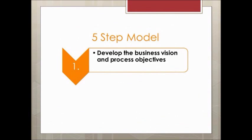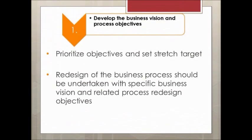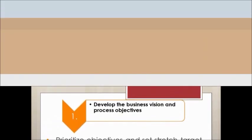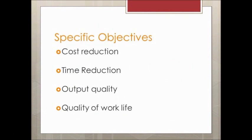Davenport's process of re-engineering begins with Step 1. The first step of the business process is to develop the business vision and process objectives. We can accomplish this by prioritizing objectives and setting a stretched target. Similarly, we can redesign the business process so that we can develop a specific vision that is related to the business objectives. Examples of objectives that businesses typically adopt are cost reduction, time reduction, output quality, and quality of work life.